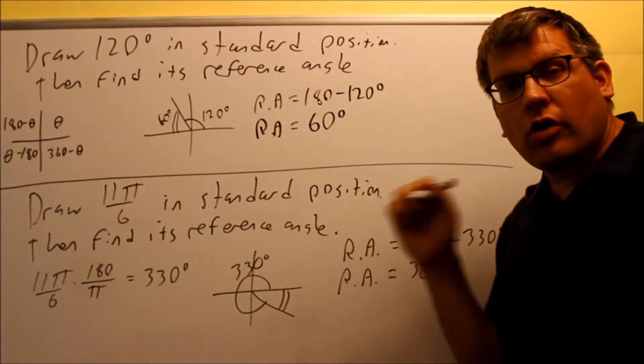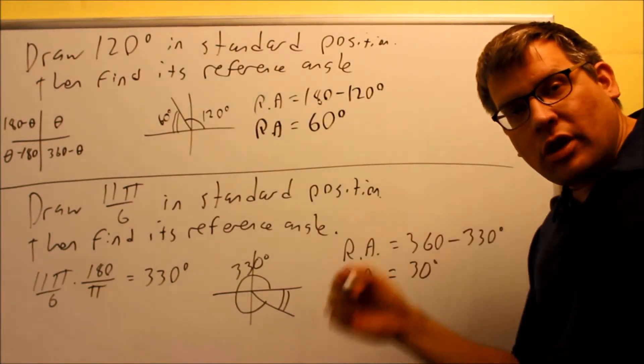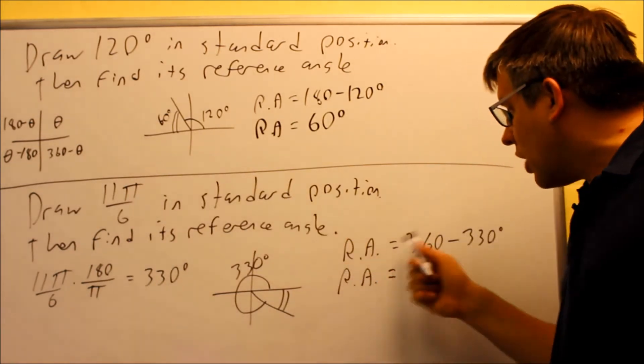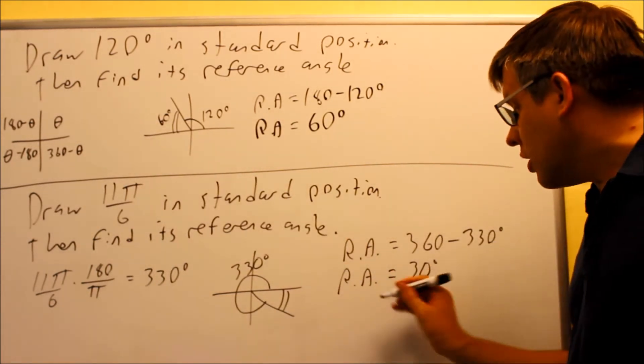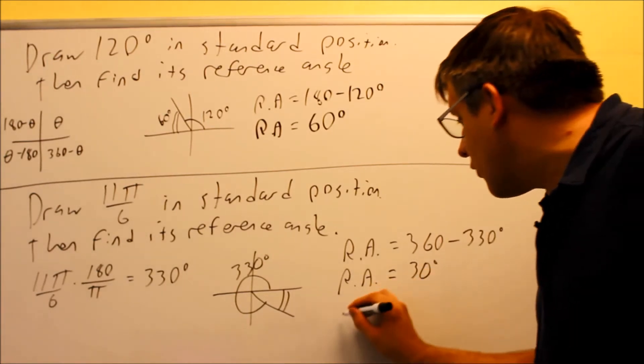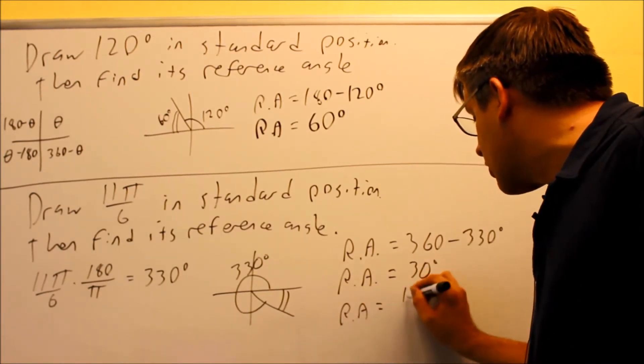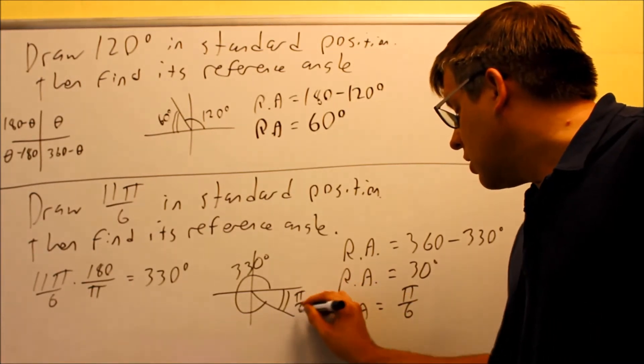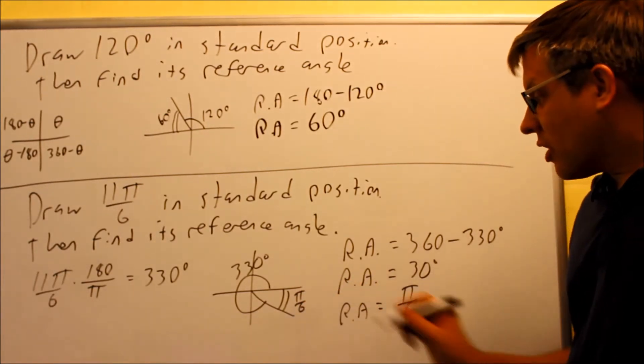Now they're going to tell you whether they want the angle, reference angle written in degrees or radians, but generally, if the original angle was in radians, they want the reference angle also to be in radians. So I would change that back by multiplying by pi over 180. And if you were to do that, your reference angle is going to be equal to pi over 6. So this angle right here, this would be pi over 6. That's your reference angle.